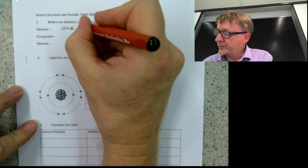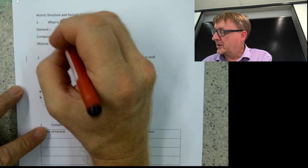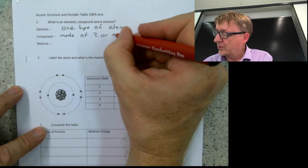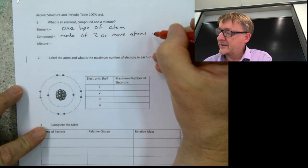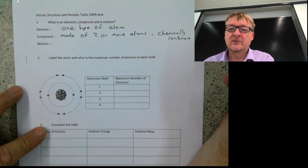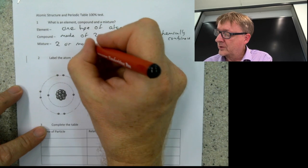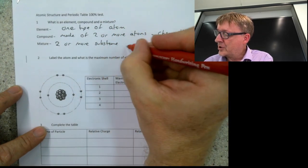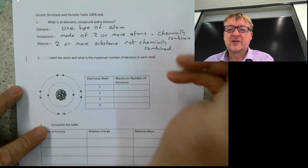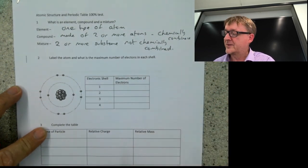An element is one type of atom — so potassium, sodium, chlorine. A compound is a substance made of two or more atoms, but the key is that they are chemically combined — it's like two people with superglue on their hands, so they get chemically combined together. A mixture is two or more substances not chemically combined — like boys and girls in a room; you can separate them because they're not chemically combined.